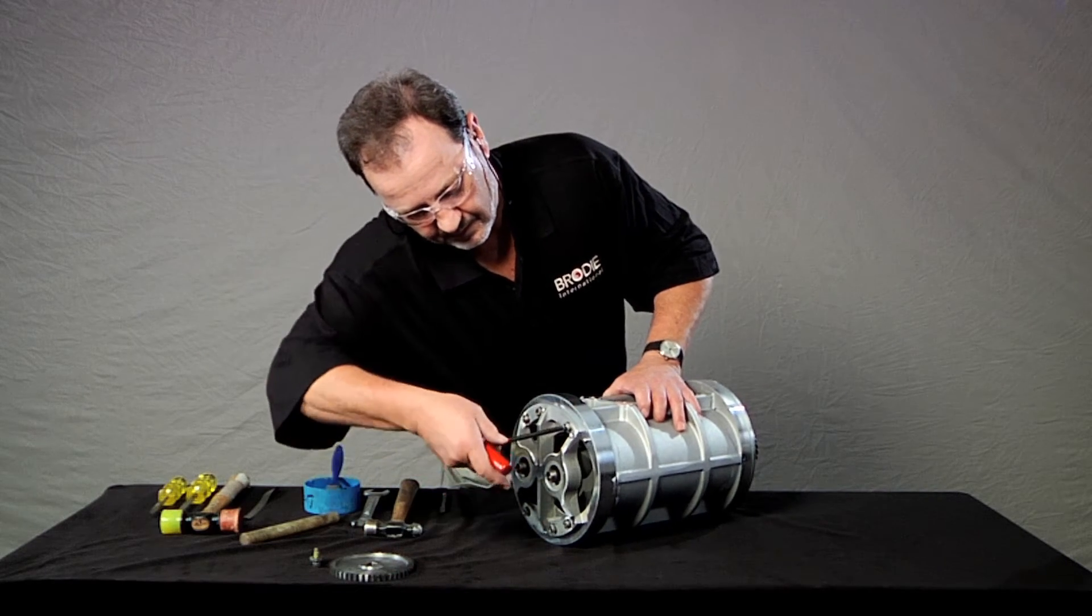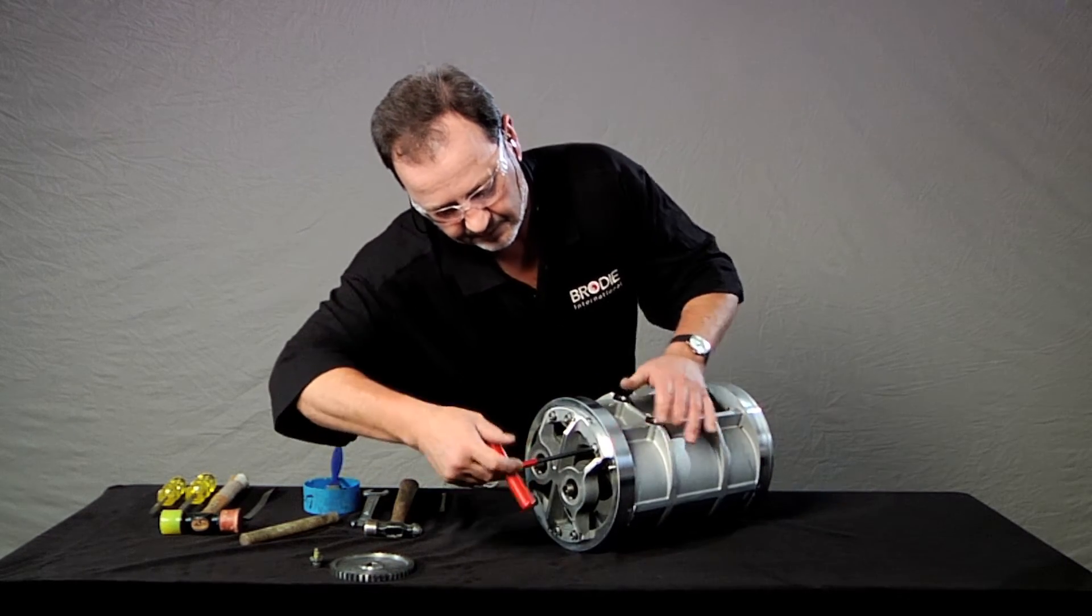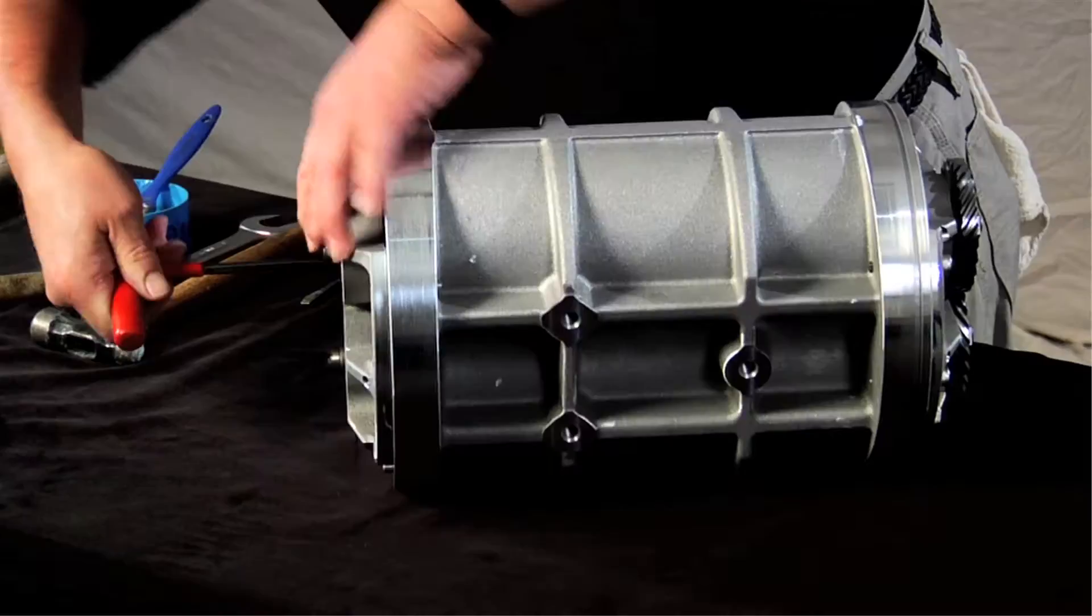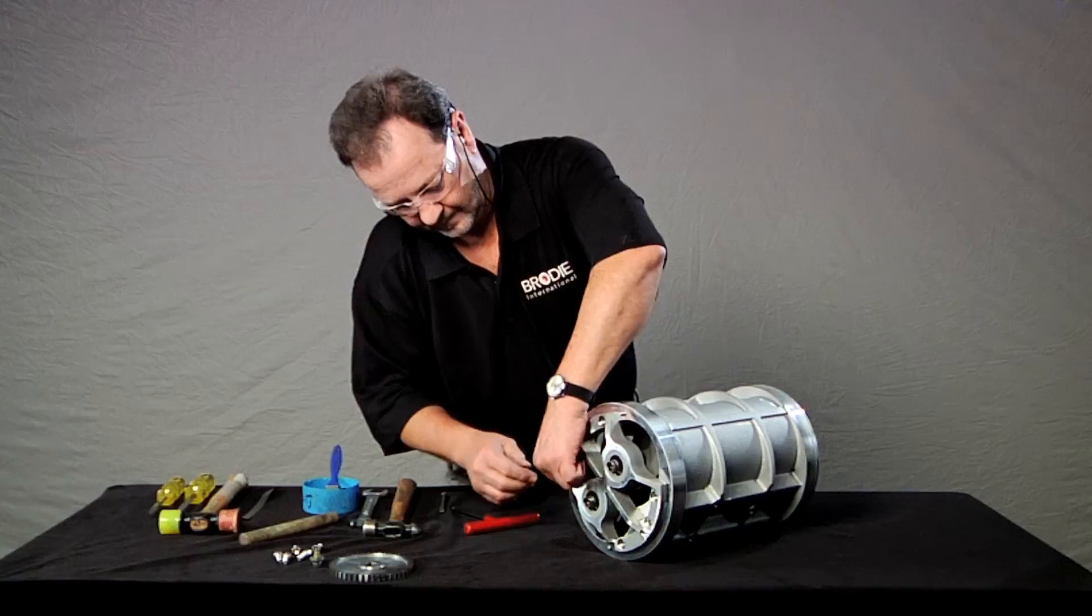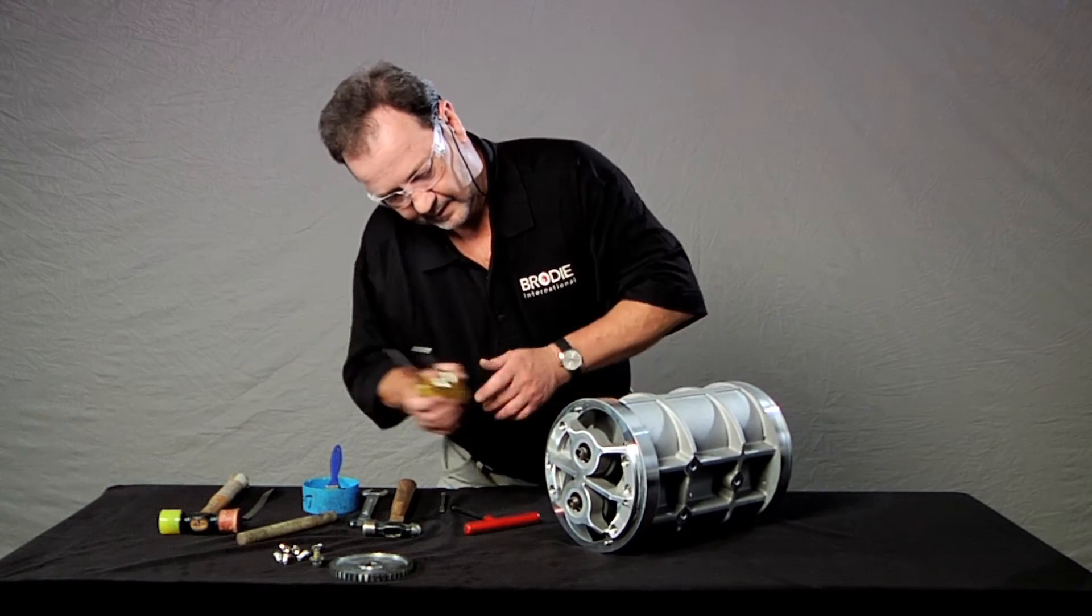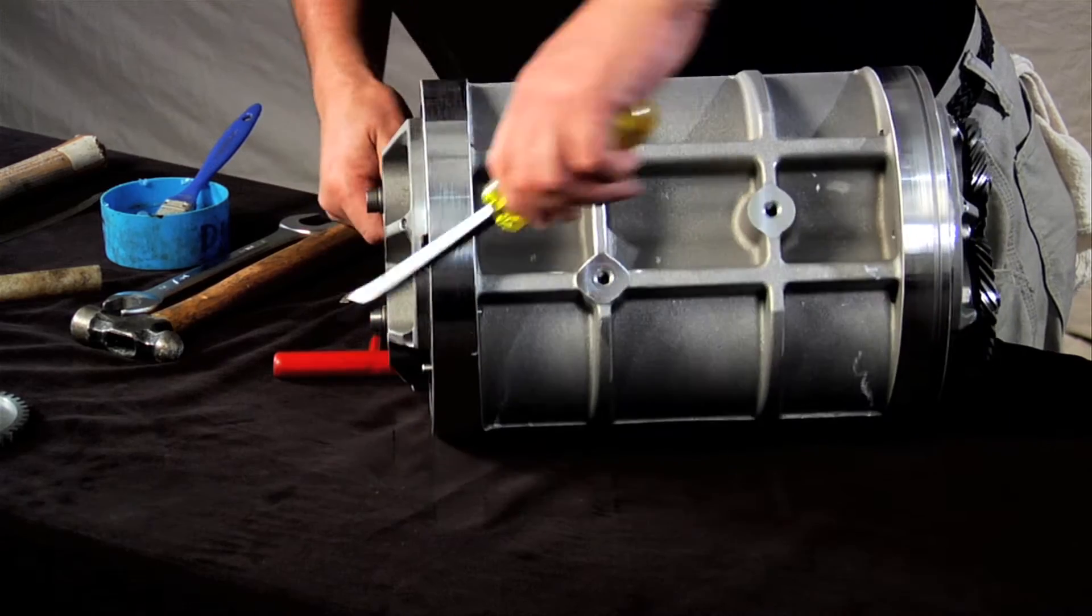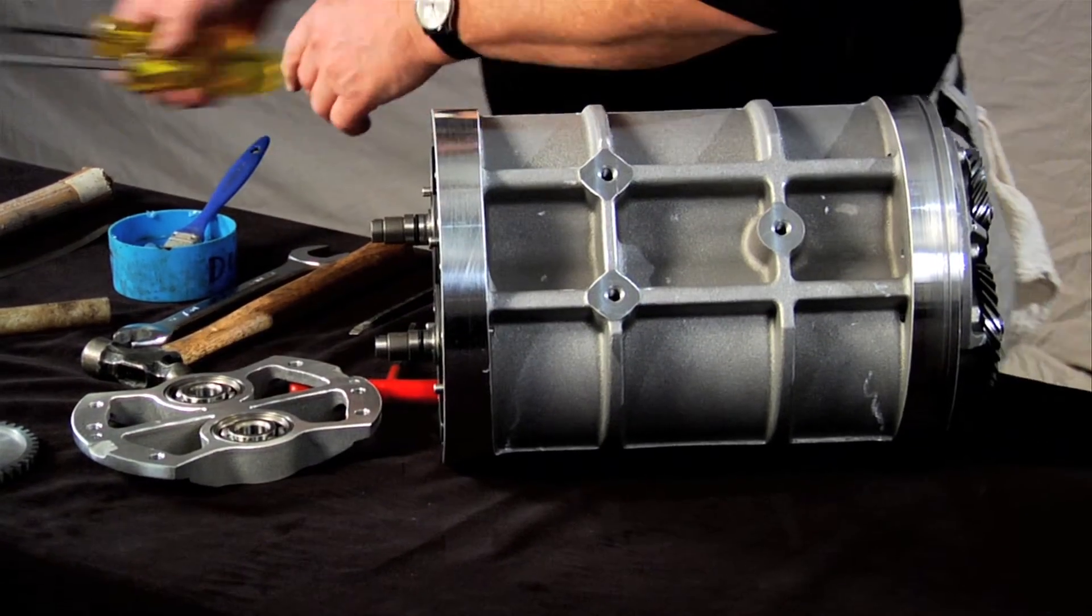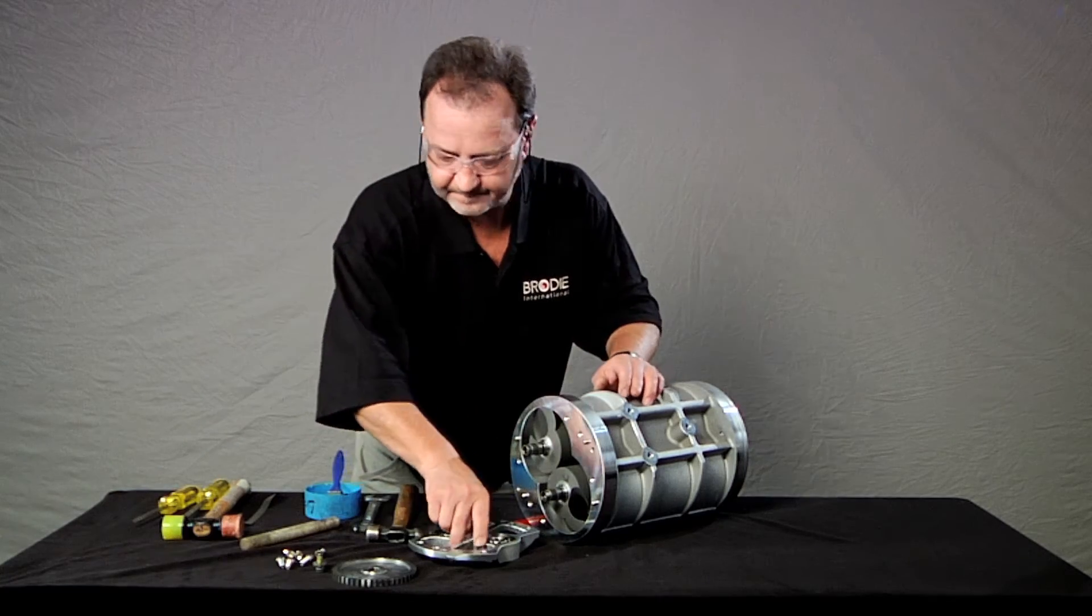Use the same Allen wrench to remove the six retaining screws from the end plate. You may need to use two flathead screwdrivers to pry the end plate loose. Wedge the screwdrivers between the end plate and the measuring unit. The end plates are slotted to aid removal. Once it is removed, set the end plate aside.